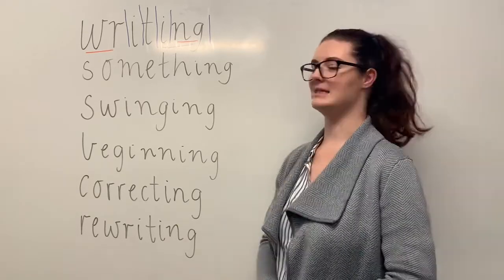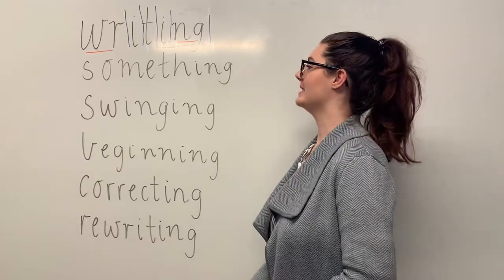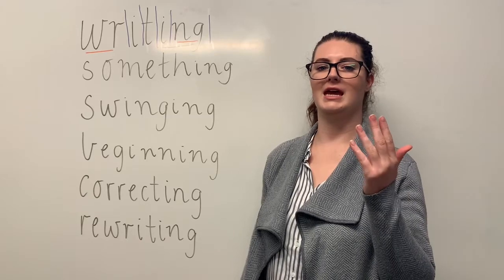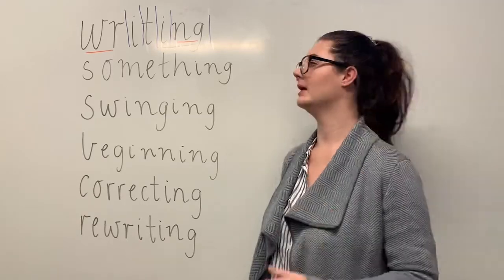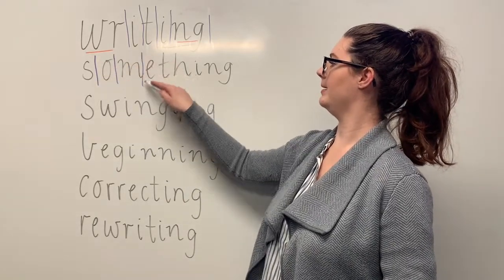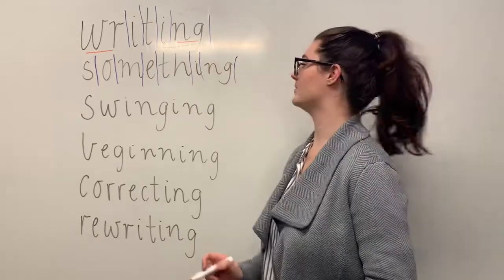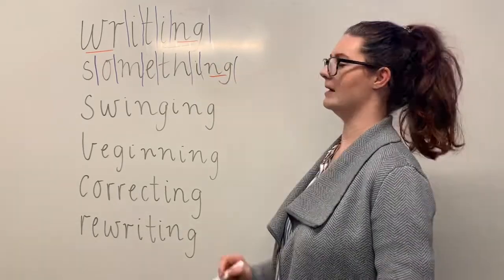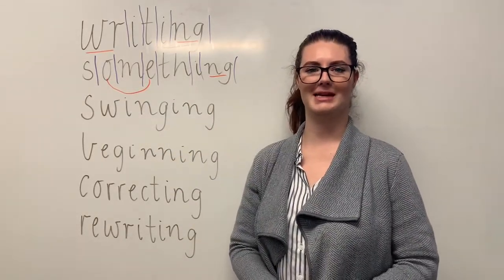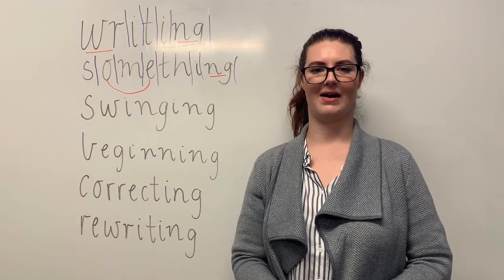Our next word is something. Say something. I hate that feeling when you have something in your shoe. The sounds in something are: s-u-m-f-i-n. The letters in something are s-o-m-e-t-h-i-n-g. The parts that we need to remember are the NG diagraph making the N sound and the O-E split diagraph making the O sound. Can you teach it to me? Something. S-o-m-e-t-h-i-n-g.